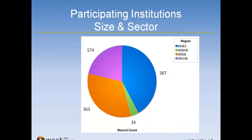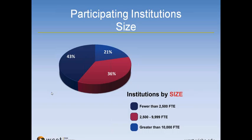This slide breaks down institutional membership by region. MEC added its states early, as did WICHE, and SREB is rapidly going to pass them before too long. Regarding participating institution size, the numbers haven't changed much — almost half of participating institutions have an FTE of less than 2,500. About 36% are in the middle group and 21% are greater than 10,000, and those percentages have been fairly consistent since the very beginning.